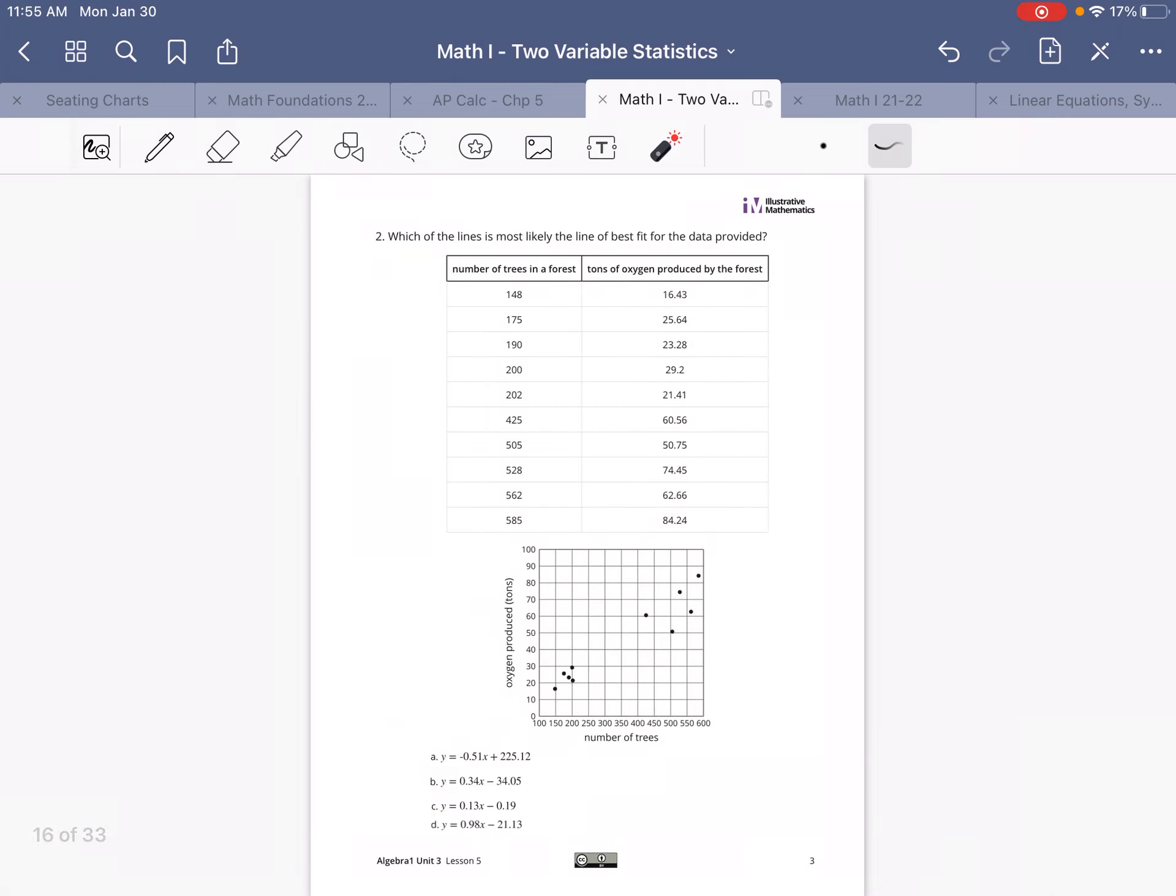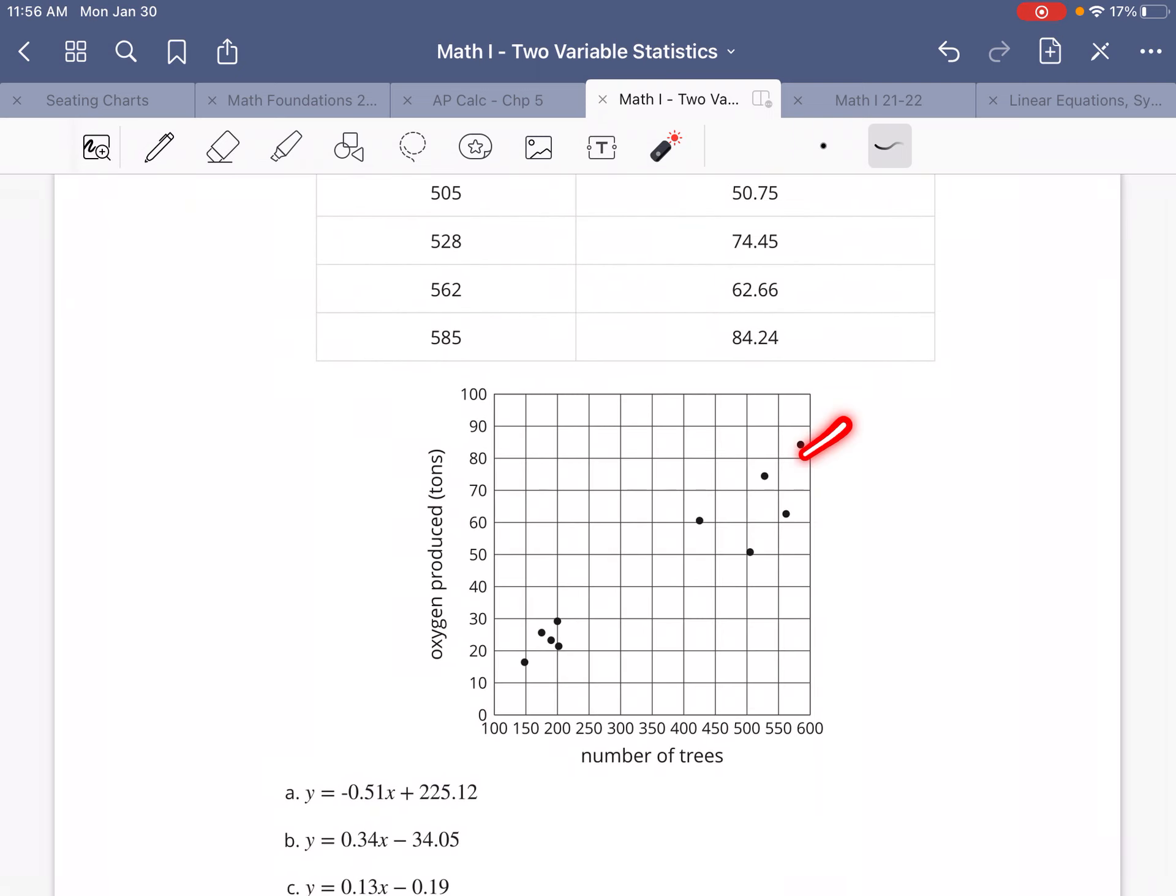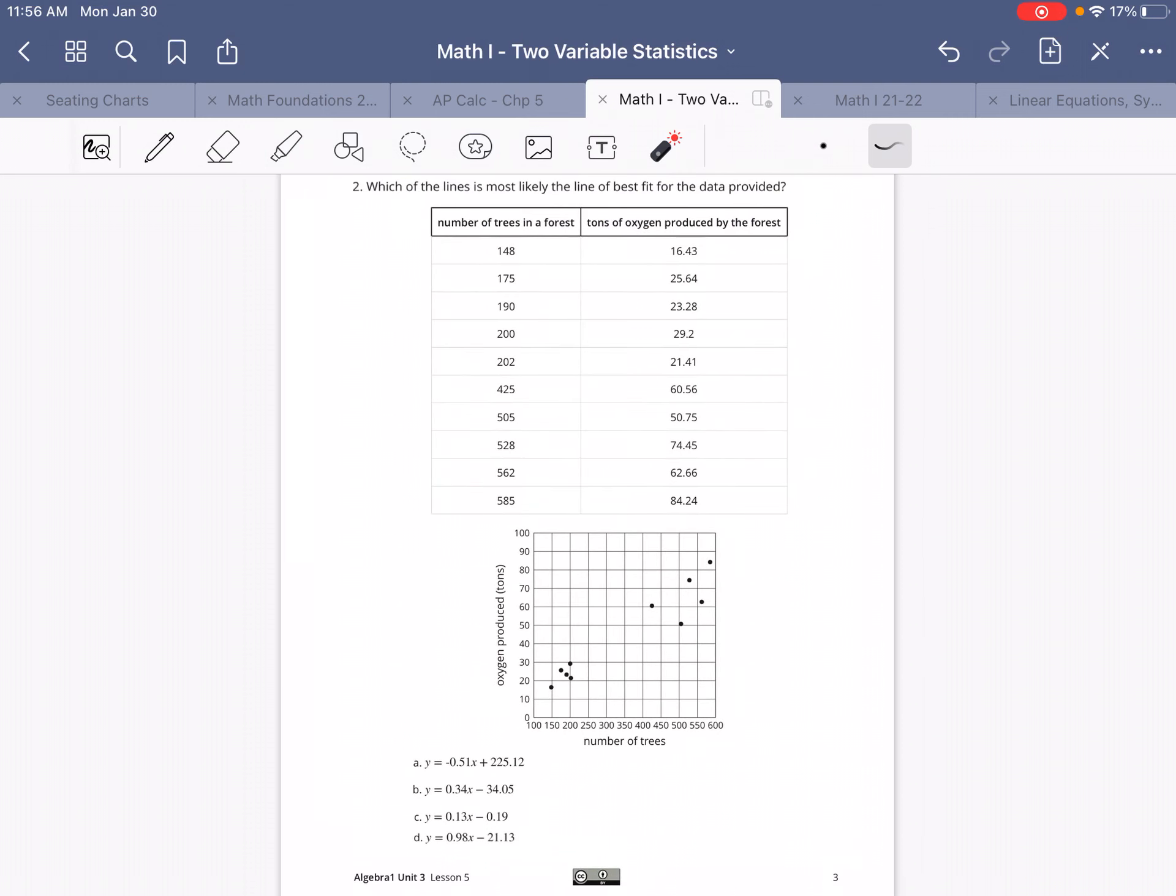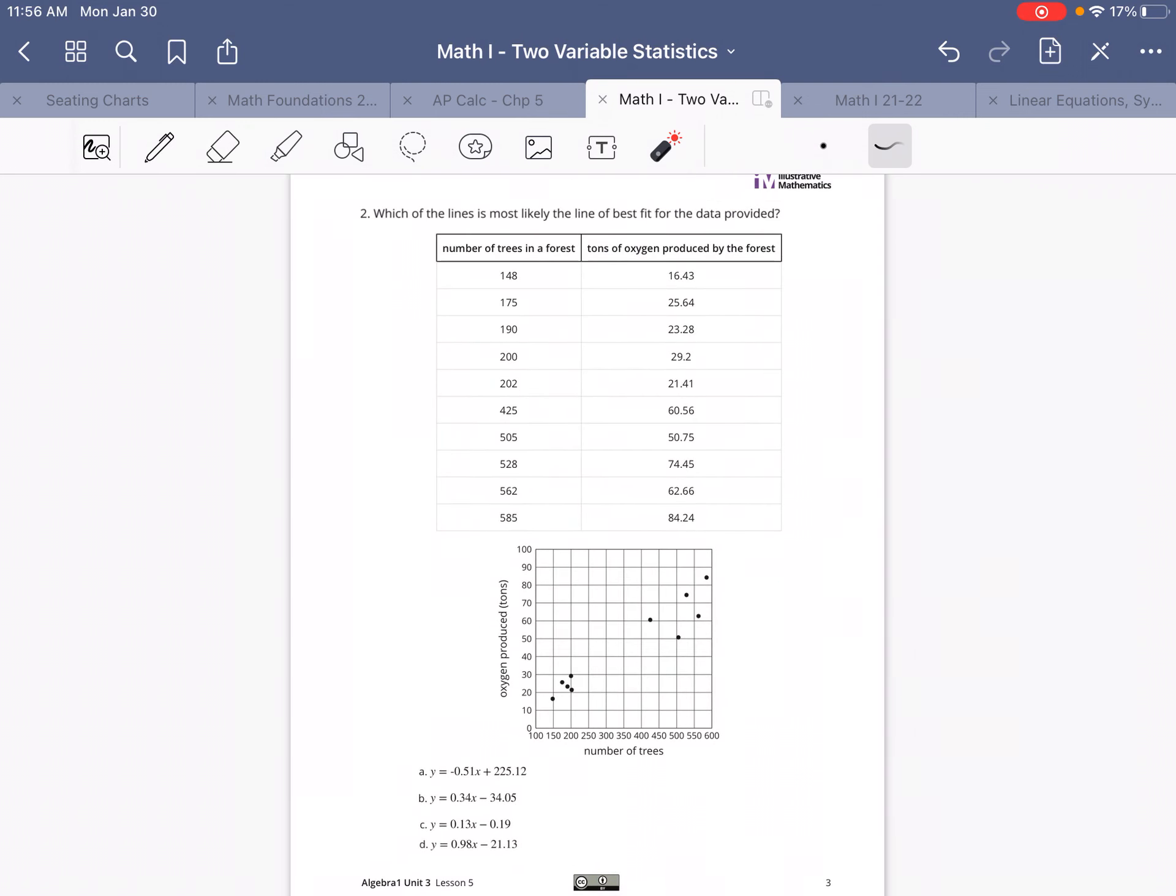Now, question number two. Which of the lines is most likely the line of best fit for the data provided? You might be tempted to look at this graph down here, which, you know, that's okay. And if you were to draw a line here, you might say, oh, my y-intercept is clearly like 10, but look at the x-axis, the number of trees. It doesn't start at zero. So the way that we can use technology to actually come up with our line of best fit is we're going to take these values right here, and we're going to put them into Desmos.